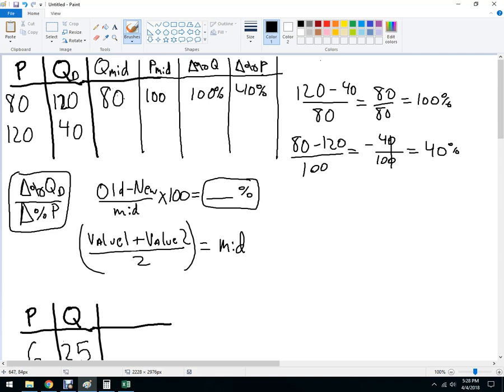And then 100% - let's plug it into this one. 100% over 40%. Those cancel out. It's really 10 out of 4, so 2.5 is the first elasticity here. 2.5 is more than 1, so that's pretty elastic demand there, price elasticity.